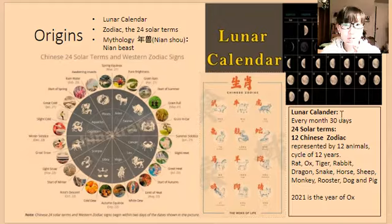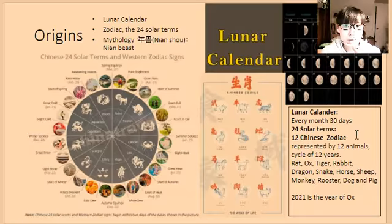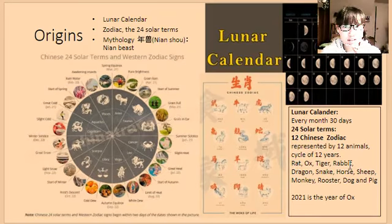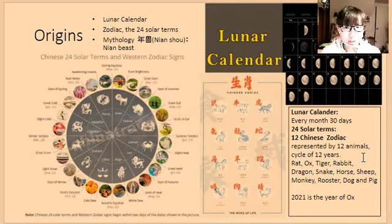For the lunar calendar, there are 30 days for each month. For the Chinese zodiac, there are 12 animals: rat, ox, tiger, rabbit, dragon, snake, horse, sheep, monkey, rooster, dog, and pig. Each animal represents one year, so this is a full cycle of 12 years, and 2021 is the year of the ox.